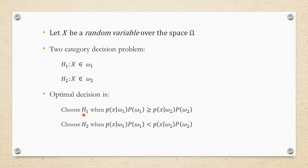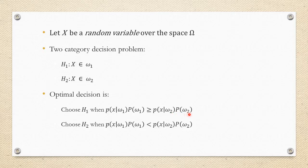We choose hypothesis 1 if the probability of x given hypothesis 1, weighted by the prior probability of omega 1, is greater than or equal to the probability of x given omega 2, weighted by the prior probability of omega 2. We choose hypothesis 2 when we don't choose hypothesis 1 — that is, we replace the greater-than-or-equal sign with a less-than sign.